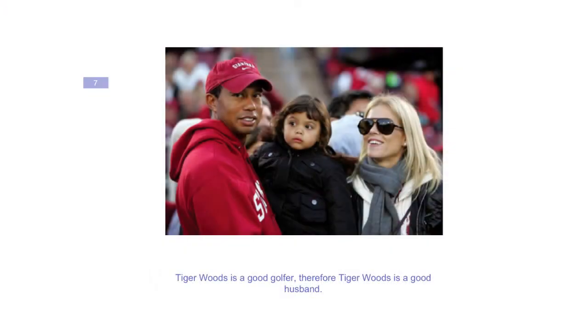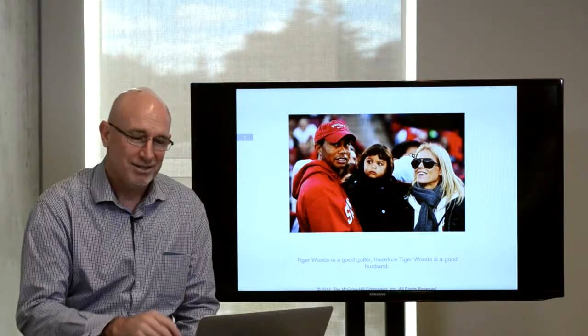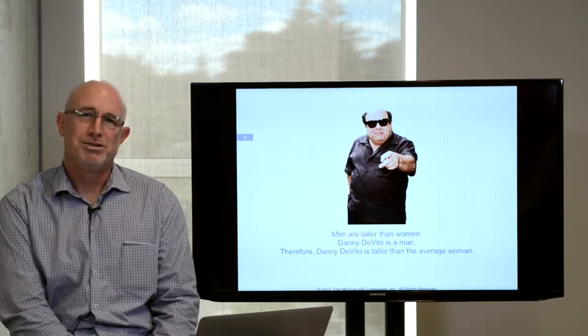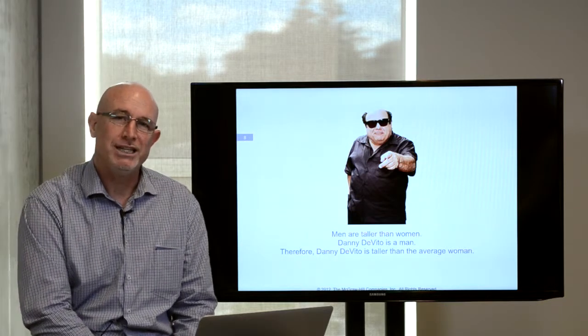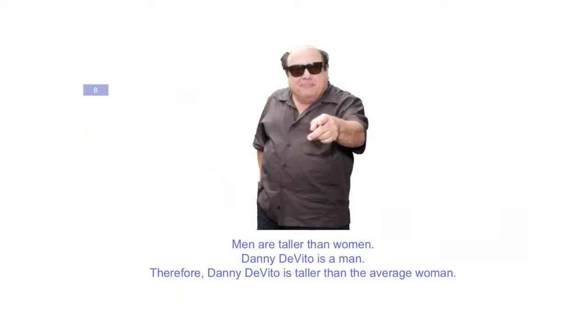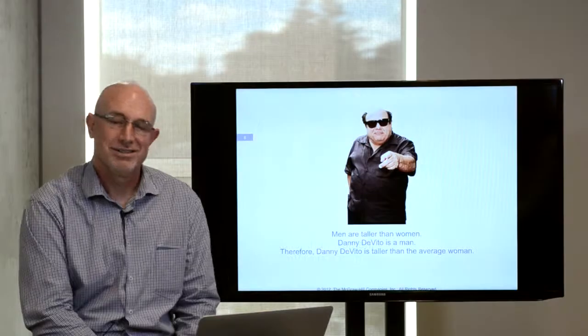Here's an example. Golfers in the main have been shown to be good husbands — top golfers, international golfers. Here's a fallacy where that characteristic is assigned to all members of that group: Tiger Woods is a good golfer, therefore Tiger Woods is a good husband. Fallacy. How about this one? Danny DeVito, who's 5'3". Men are generally taller than women — that is true, however it's not always true. Danny DeVito is a man, therefore Danny DeVito is taller than the average woman. That's fallacious.